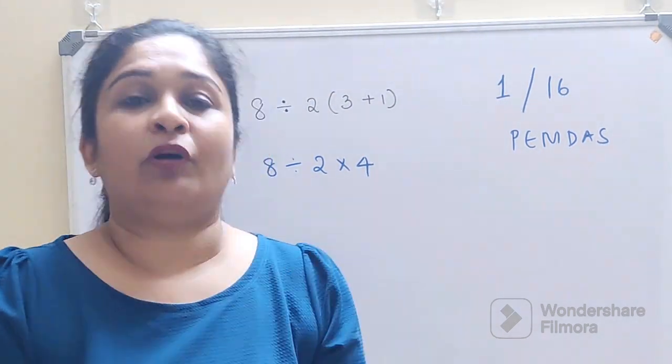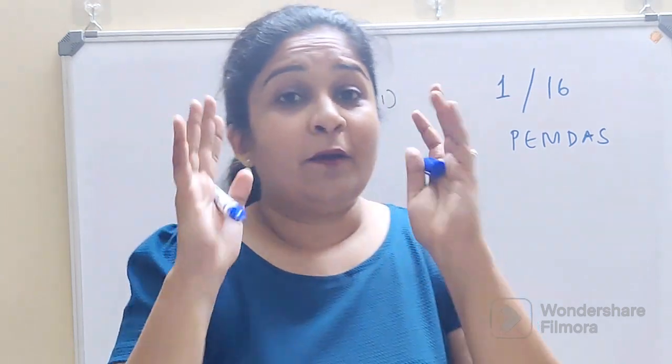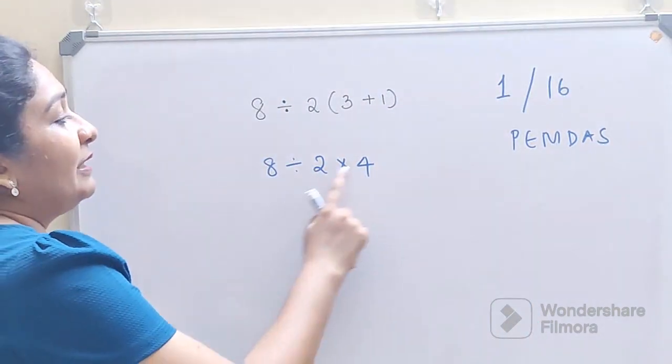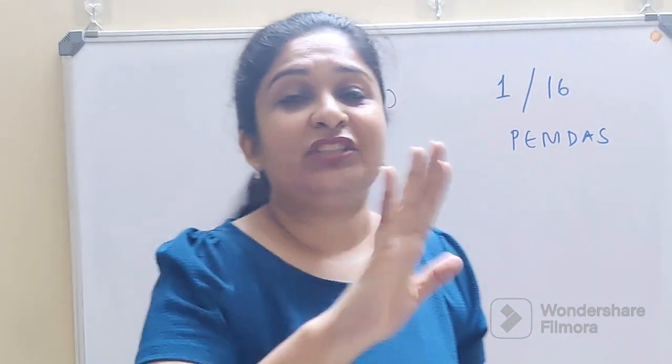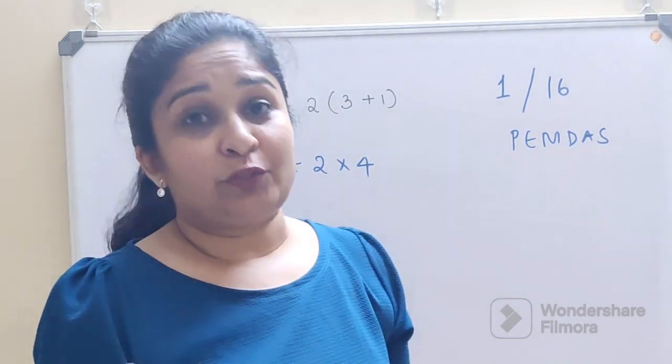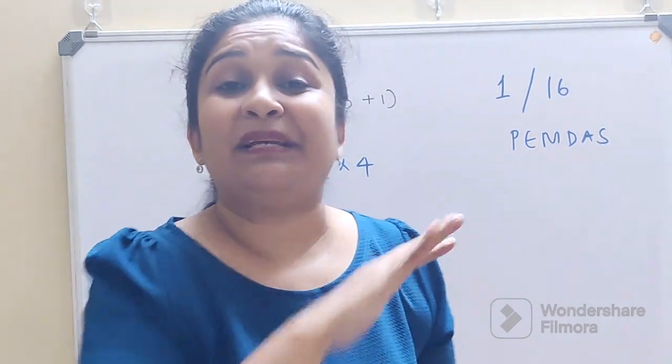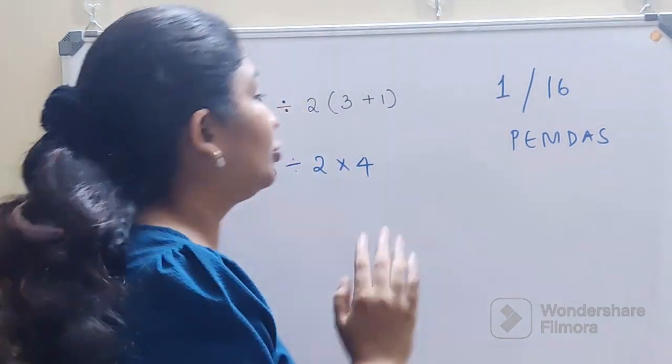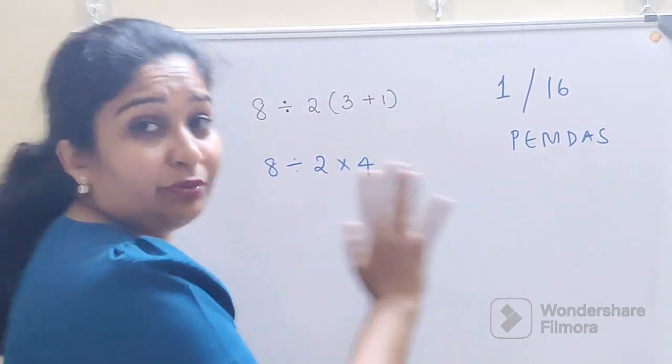And honestly you don't have to follow BODMAS or PEMDAS when it comes to multiplication and division or addition and subtraction. Between these two the ranking remains the same. So for that you should always start from your left, go up to right.